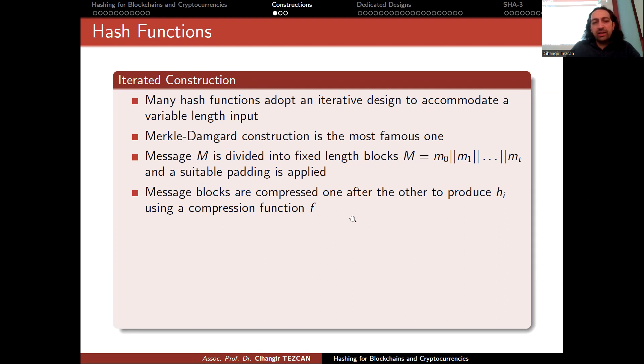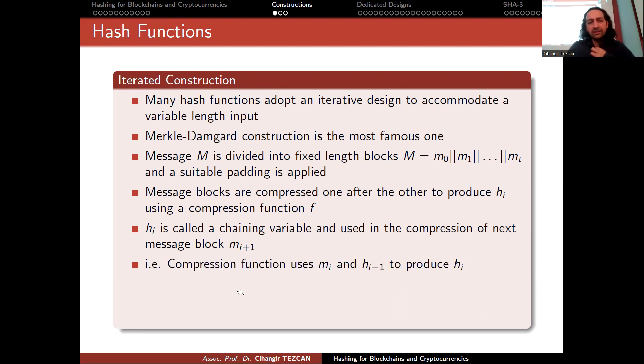h_i is called the chaining variable, and using the compression of next message block m_{i+1}—in other words, the compression function uses m_i and the previous h_i value to produce the current h_i.